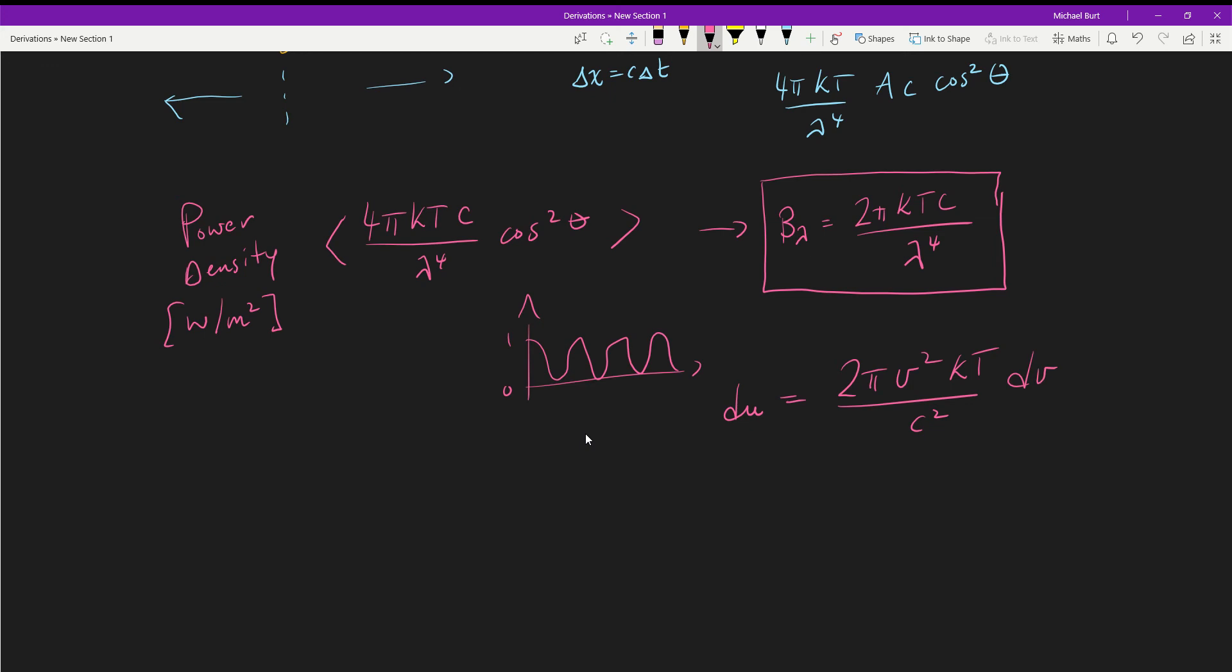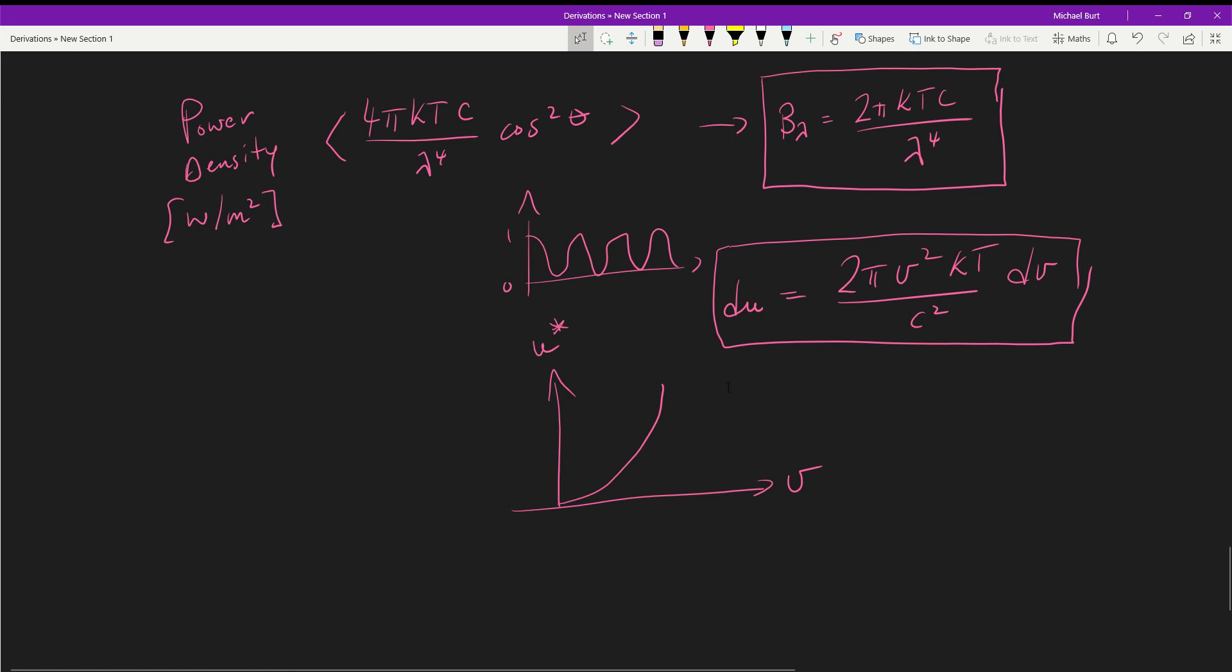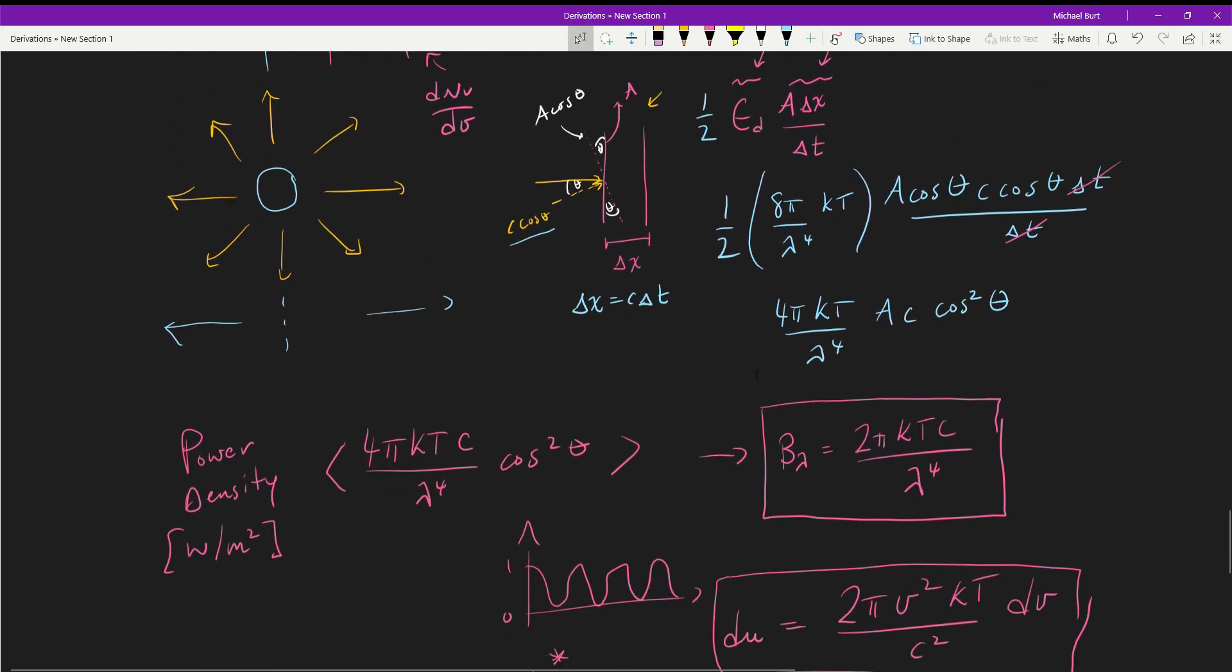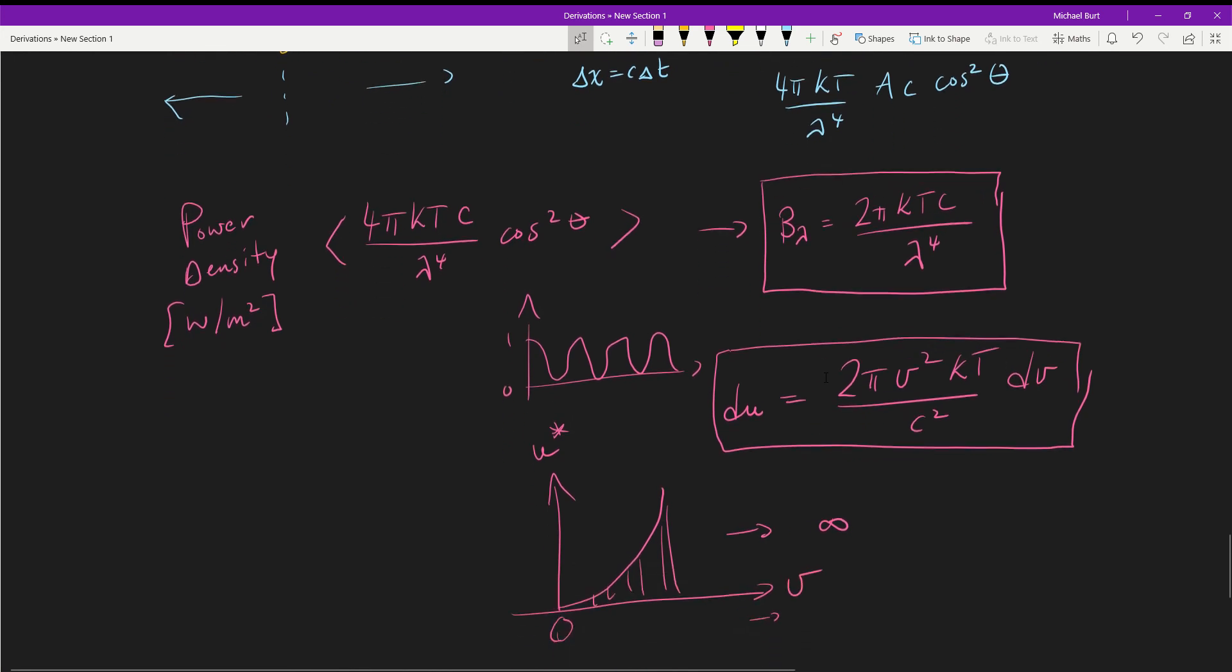Why is this problematic? Well if you notice, this is a function which cannot be integrated over all frequencies. This is our frequency axis, this is the special u we created. This thing, you cannot integrate it from zero to infinity - it goes to infinity. This is an impossible result, this result is not correct.